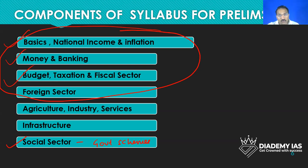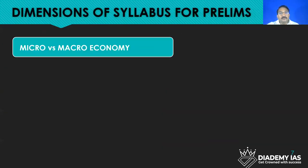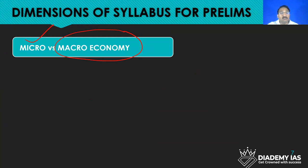There is a repetition of questions — the same concepts are repeating again and again. Now, looking at the dimensions of the syllabus: is it microeconomy or macroeconomy? The syllabus of UPSC is macroeconomy. Sometimes they ask microeconomy questions, but for that we cannot devote time because if there is a difficult question, it is difficult for everyone. The syllabus is macroeconomy only.